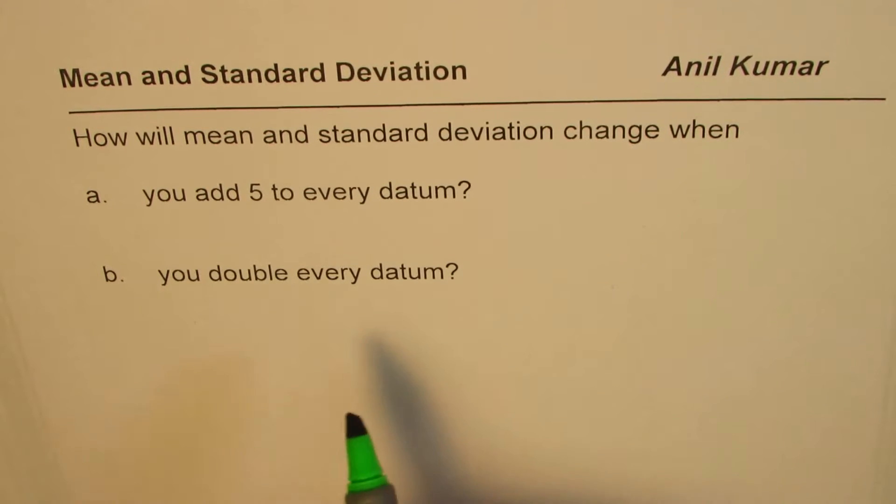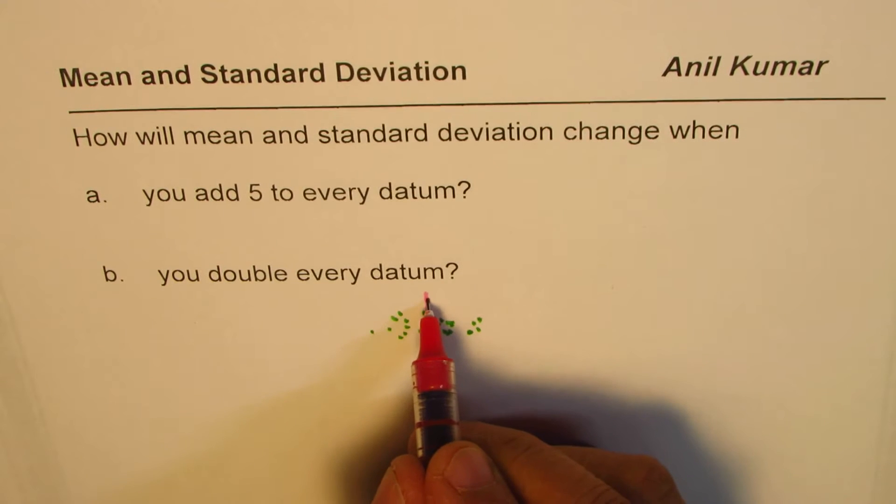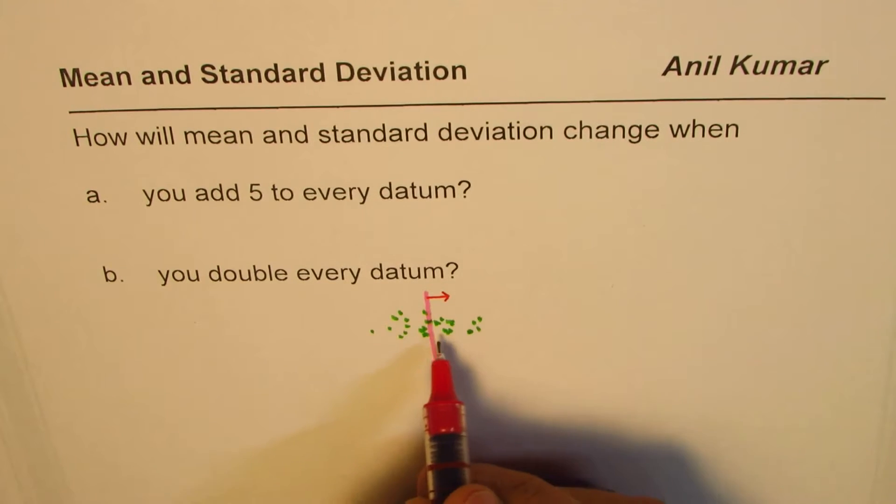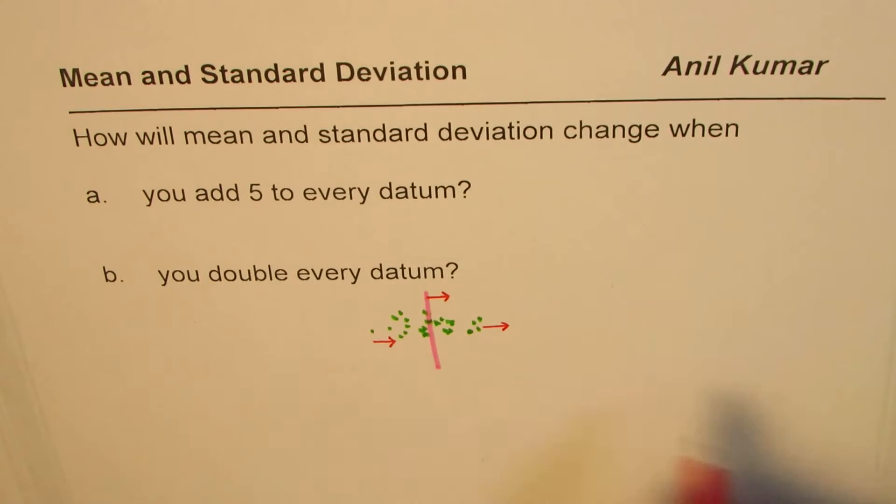Here is how we can look at it. Let's say these are our data points. And let us assume for the time being that mean is somewhere here. Now what happens when you add 5 to it? If you add 5, the whole thing will shift by 5 units. All these points will shift by 5 units.